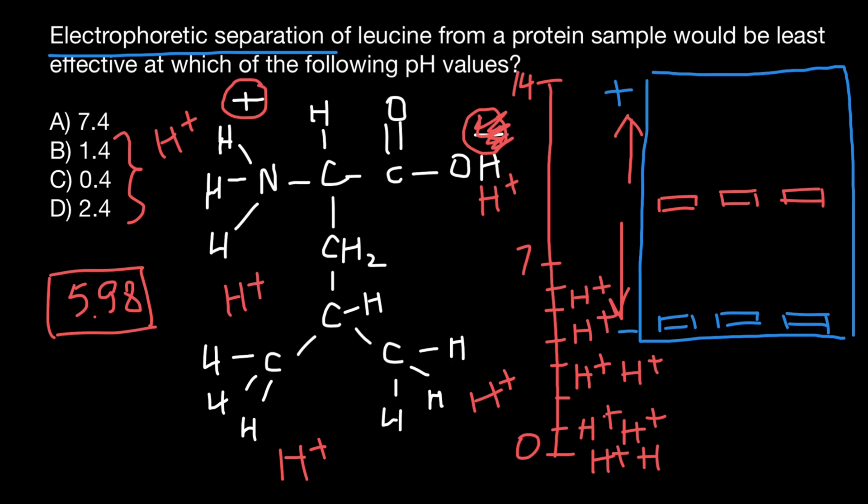But if our gel would have a pH which is going to be substantially low, then our molecule would have a positive charge and would move in the direction of the cathode. But if our medium is going to have a very high pH, would be very basic, it's going to have negative charge and would move in the direction of the anode.